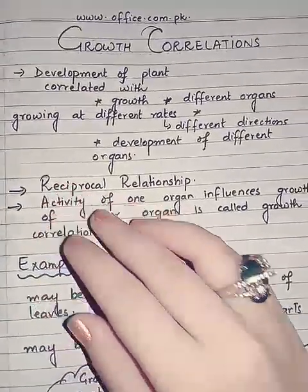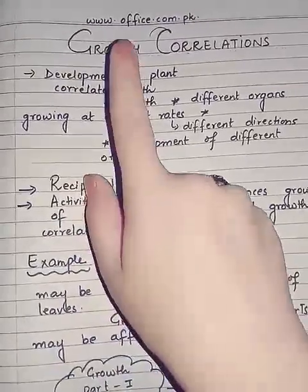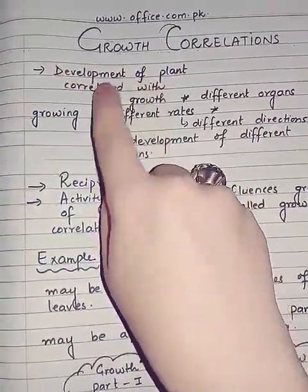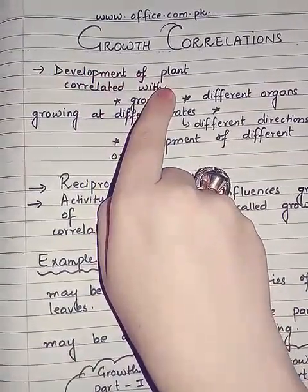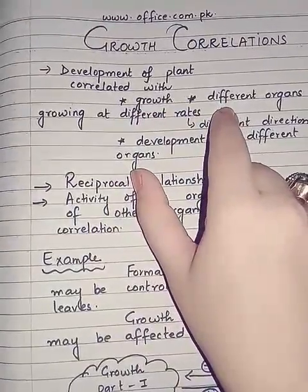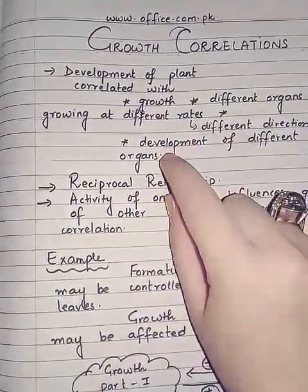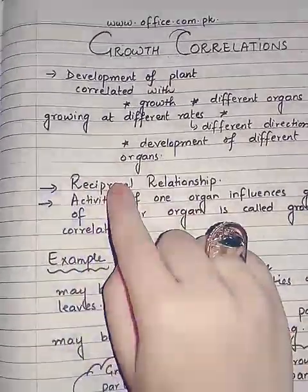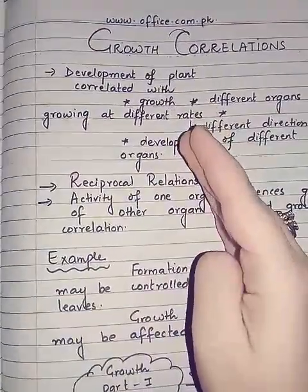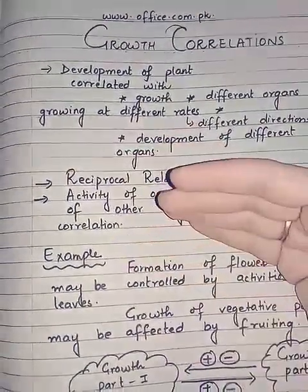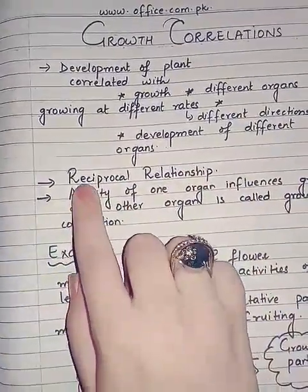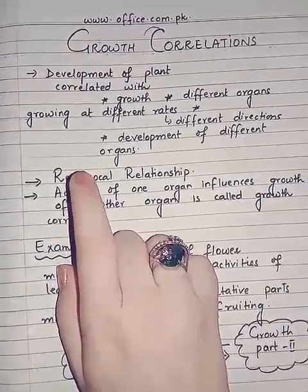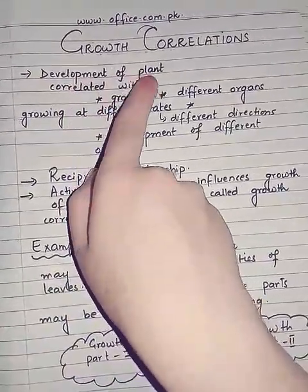Dear students, the next topic we are going to start today is growth correlations. As the name indicates, the growth of different parts will be interrelated with one another. The development of plants is correlated with growth, with different organs growing at different rates and in different directions. This reciprocal relationship means if one part grows, the other's growth is inhibited or less exhibited. The activity or growth of one organ influences the growth of the other organ — this is called growth correlation.